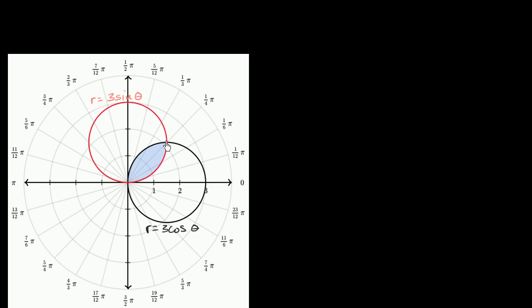We're clearly bounded by two different polar graphs, and it looks like they intersect right over here. If we eyeball it, it looks like they're intersecting when theta is equal to pi over four. We can verify that: cosine of pi over four is the same thing as sine of pi over four, so their point of intersection happens at theta equals pi over four. If that wasn't as obvious, you would set these two equal to each other and figure out the thetas where this actually happened.